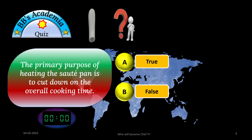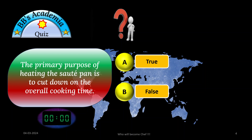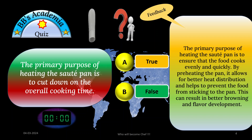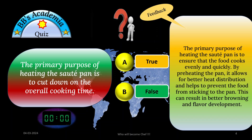Time is up. The correct answer is: this statement is false. The primary purpose of heating the sauté pan is to ensure that the food cooks evenly and quickly. By preheating the pan, it allows for better heat distribution and helps to prevent the food from sticking to the pan. This can result in better browning and flavor development.